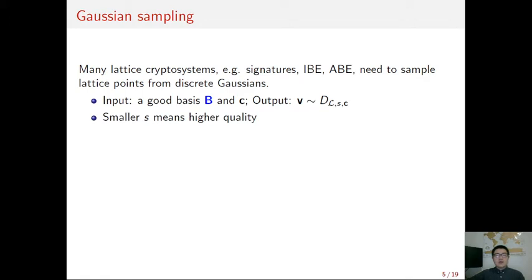The quality of the used sampler is the minimal Gaussian width it can achieve. Actually, a smaller Gaussian width implies a higher security level and higher quality of the sampler.